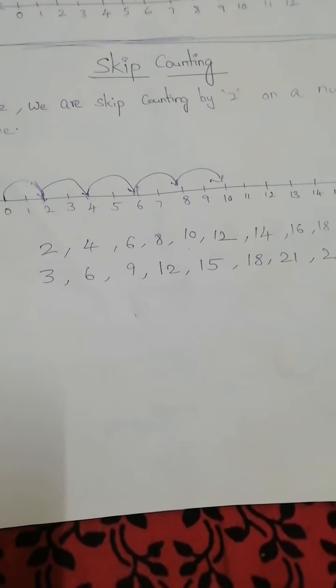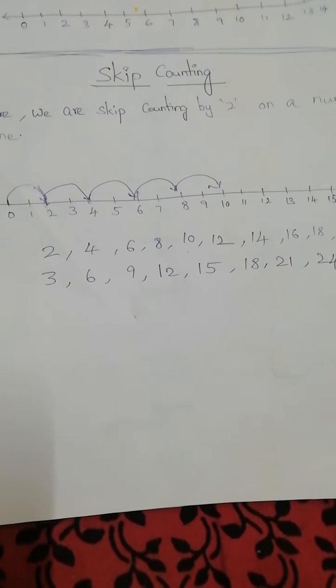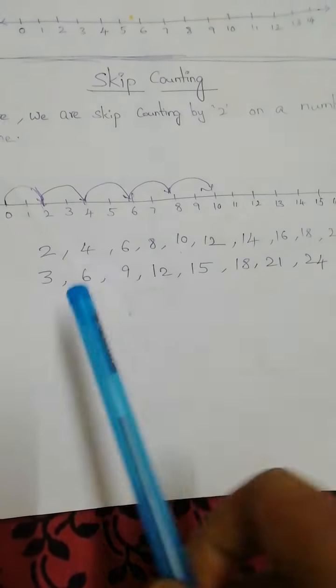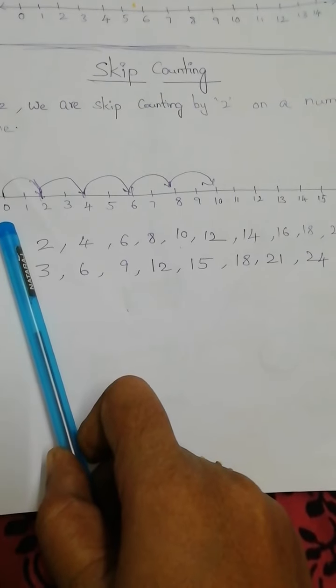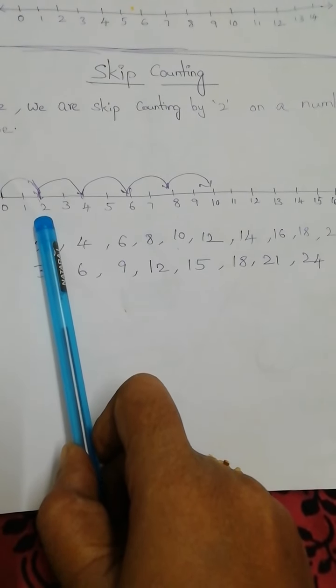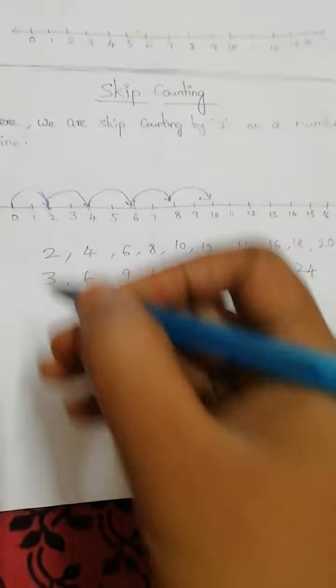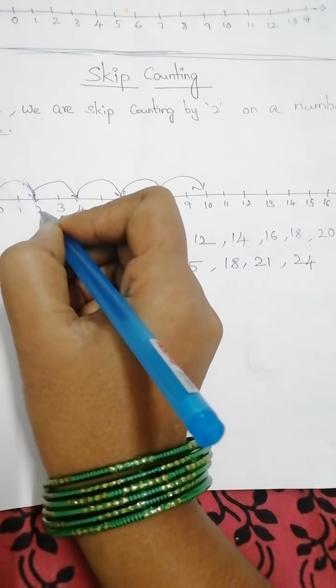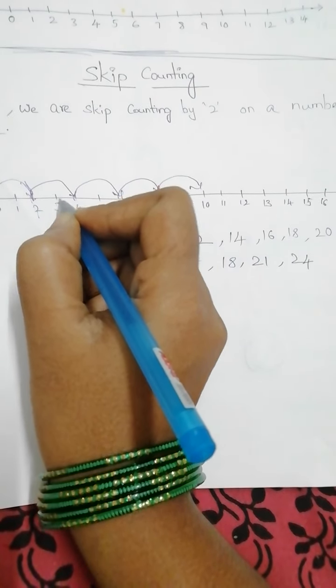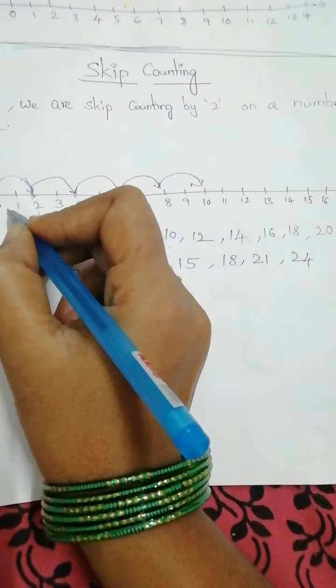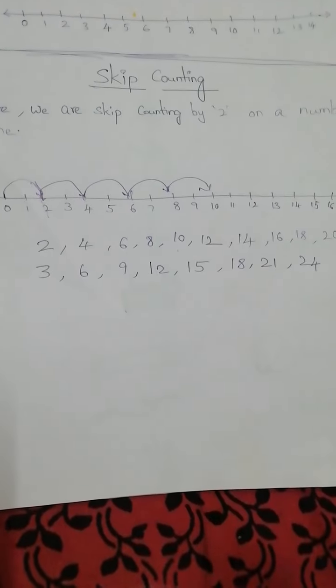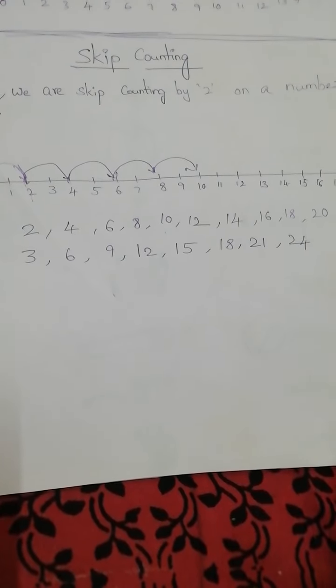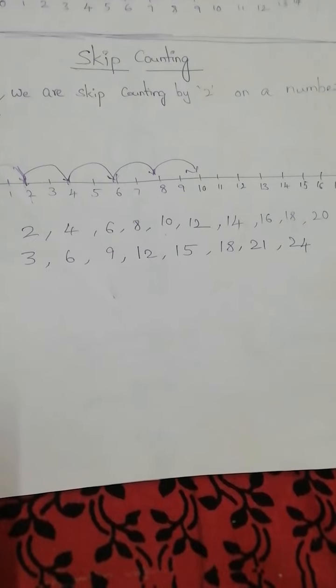We keep on adding the same number each time to the previous one. For example, I will start counting from zero. I will add two, and I get zero plus two equals two. Then for two, I will add two - that will give us four. So skip counting means we are adding the same number multiple times to the previous number. I hope it is helpful to you all. Thank you.